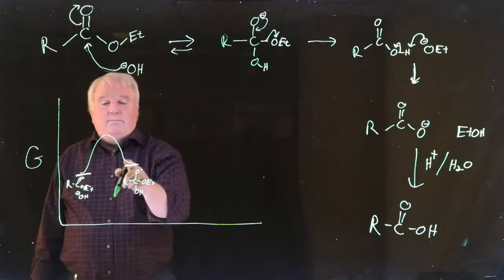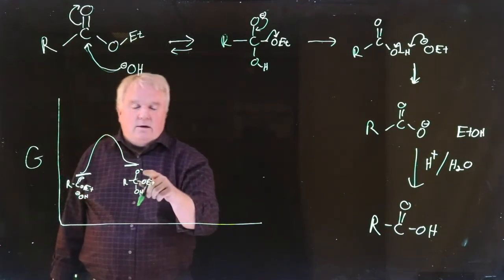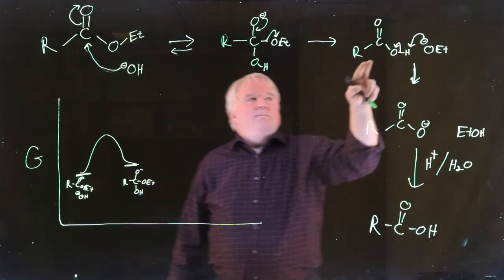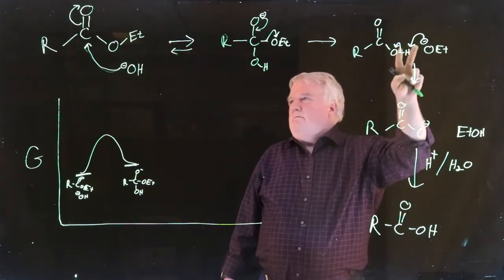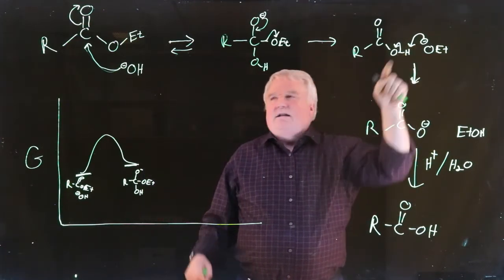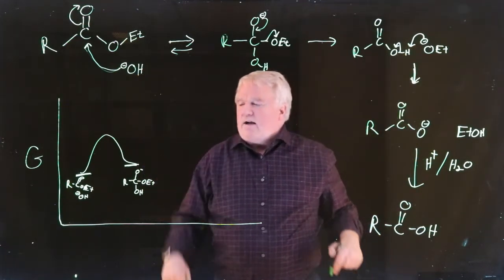And it can go back by just going back over that energy barrier, or it can go forward and perform this. Now, this is going to be not much different in energy than over here. It's likely to be a little different because the ethoxide is a bit stronger than the ethoxide.